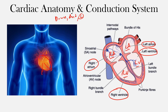Blood circulates in a closed system throughout the vasculature and through the heart. Each atrium empties into the ventricle — the right atrium into the right ventricle, and the left atrium into the left ventricle. Blood in the right atrium comes to the right ventricle, and from there goes out through the pulmonary artery.